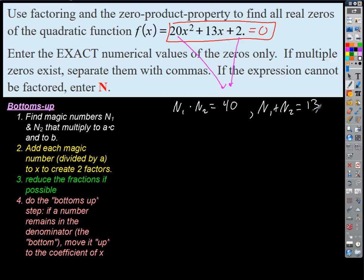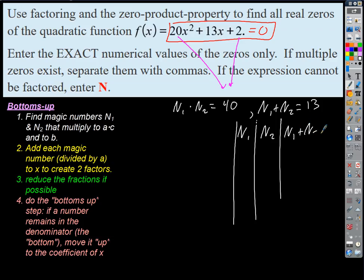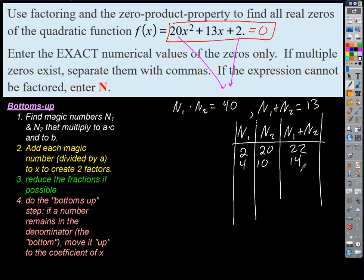What numbers multiply to positive 40 and add to positive 13? Let's make a table. Both signs are positive. 20 and 2 add to 22 — too big, numbers are too far apart. Moving closer: 4 and 10 add to 14 — closer but not there. 5 and 8 multiply to 40 and add to 13. That's our winner.